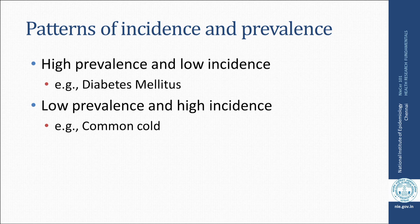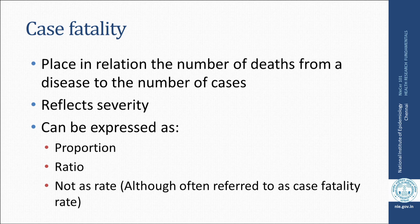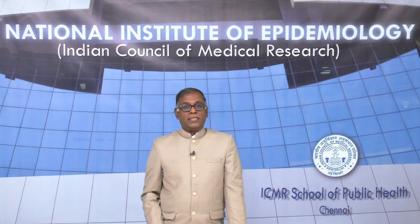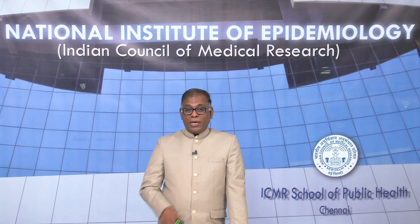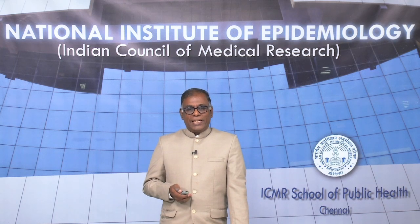Looking at patterns: high prevalence with low incidence is seen in diseases like diabetes mellitus. Low prevalence with high incidence is seen in the common cold. Case fatality relates the number of deaths from a disease to the number of cases — it reflects the severity of the disease. It can be expressed as a proportion or ratio, though it is often referred to as case fatality rate.